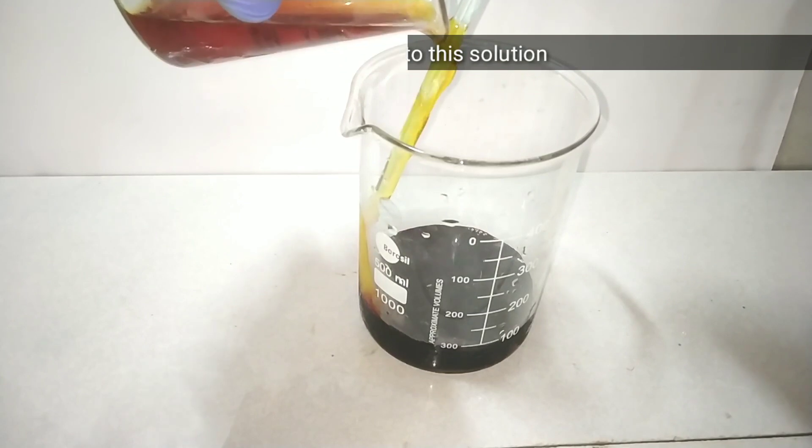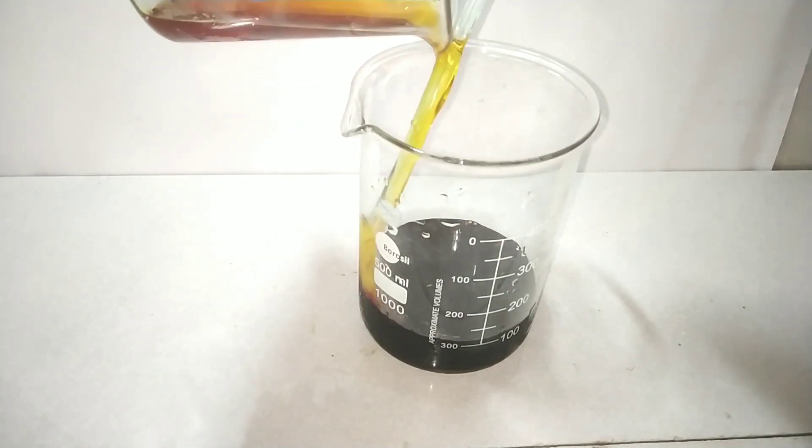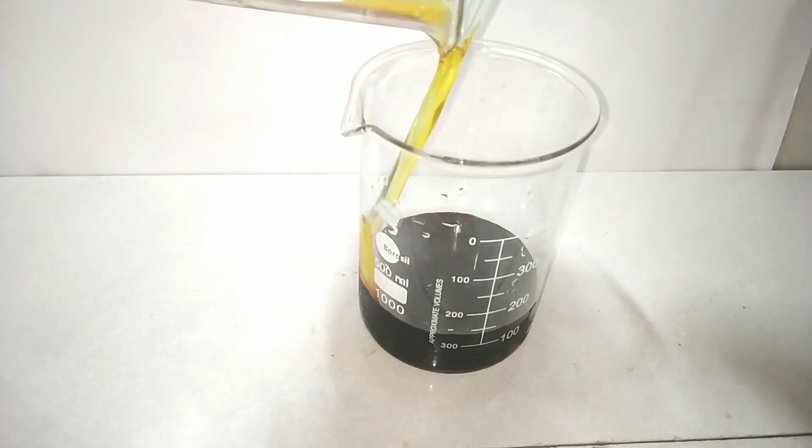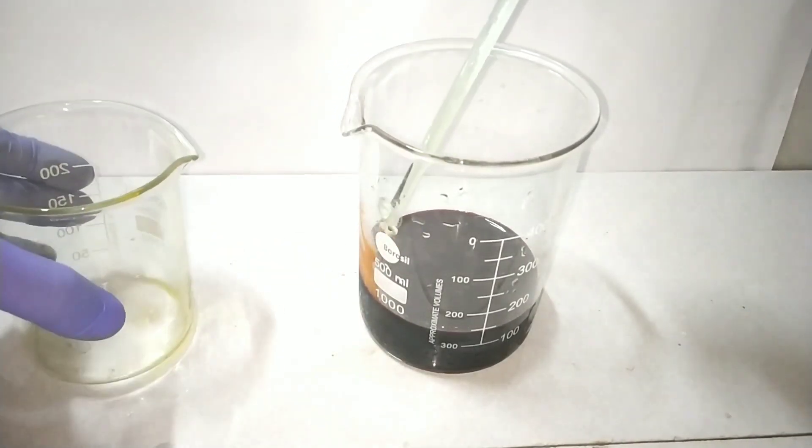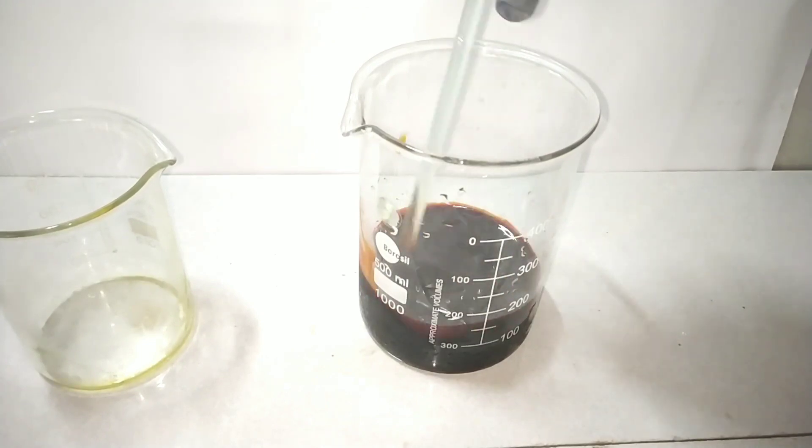When the coupling takes place, you can see a dark orange colored solution is formed. The reaction of diazonium salt with 2-naphthol is an electrophilic aromatic substitution reaction which is strongly activated by deprotonated alcohol group.